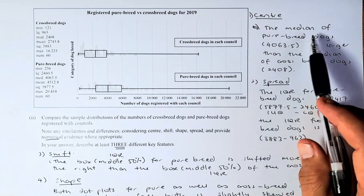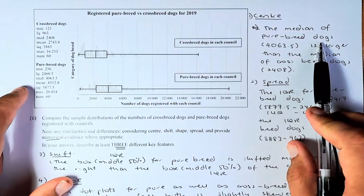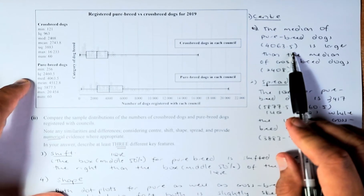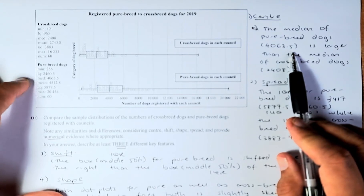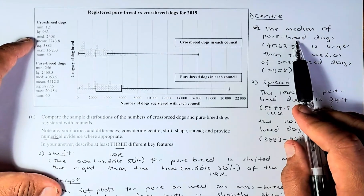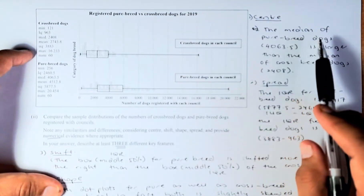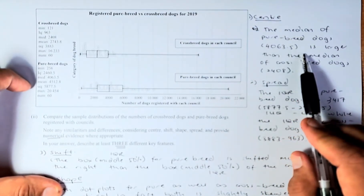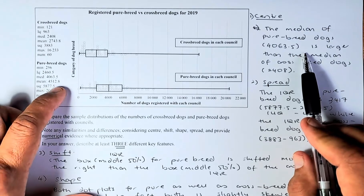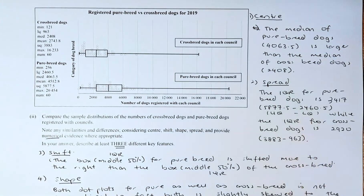First, we measure the centre. We are comparing the purebred and the crossbred. The median of the purebred dog is 4063, which is larger than the median for the crossbred dog at 2408. So the median of purebred dogs is higher than the crossbred dogs. If you do not want to use the median, you can also use the mean. The mean is also higher for the purebred dog at 4512.8, compared to 2743.8 for the crossbred dog. Either one is acceptable.